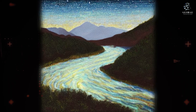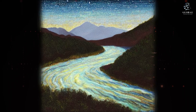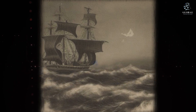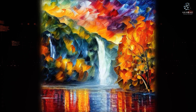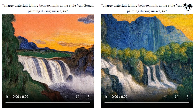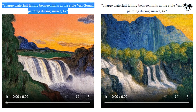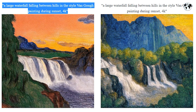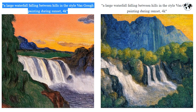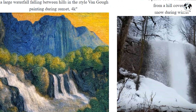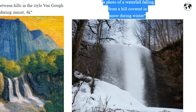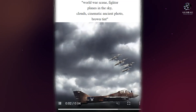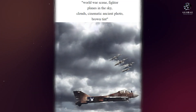Current methods that animate single images struggle to handle artistic inputs, and recent text-based video methods often introduce temporal inconsistencies, making it difficult to maintain static regions. Here are more examples: a large waterfall falling between hills in the style of a Van Gogh painting during sunset, 4K. Also: a photo of a waterfall falling from a hill covered in snow during a winter wartime scene, with fighter planes in the sky, clouds, a cinematic ancient photo look, and a brown tint.